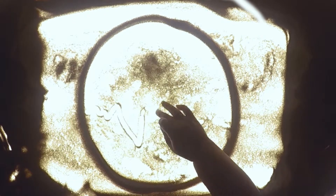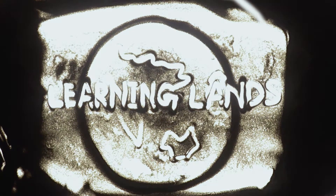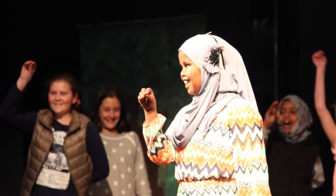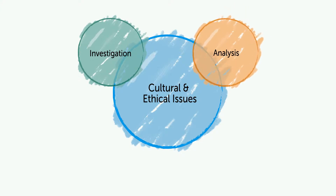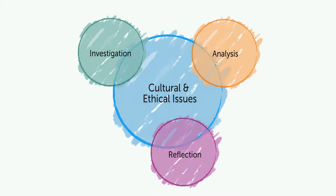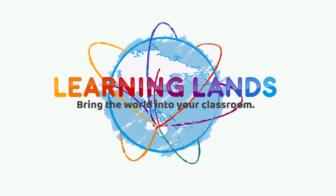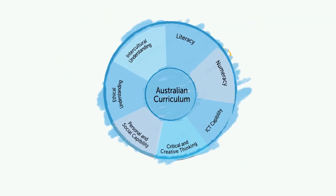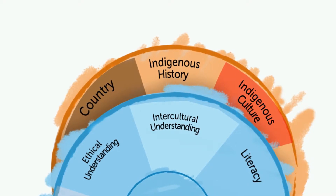Cultural Infusion brings together a complete suite of cultural learning resources. Learning Lands — your students will learn to understand their own and other cultures by investigating, analyzing, and reflecting on ethical and cultural issues. Learning Lands has resources for intercultural understanding and Aboriginal and Torres Strait Islander histories, which are now an important part of the Australian curriculum. Your students will be able to access the history of this country and its First Nations.